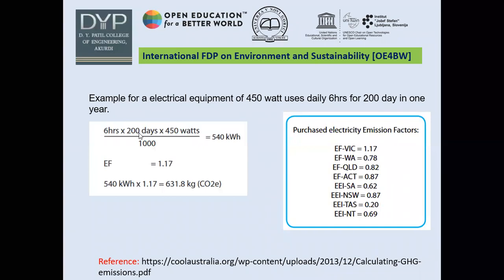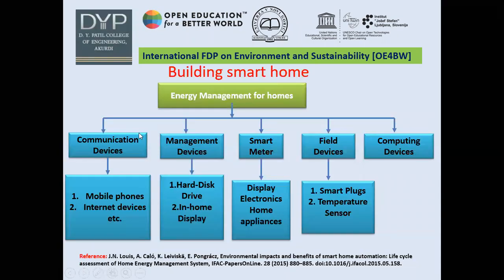Finally, to design a smart home, our goal is to reduce greenhouse gas emissions. First, we will maintain an energy management system for the home. This means categorizing home appliances into certain device groups: communication devices, management devices, smart meters, field devices, and computing devices.